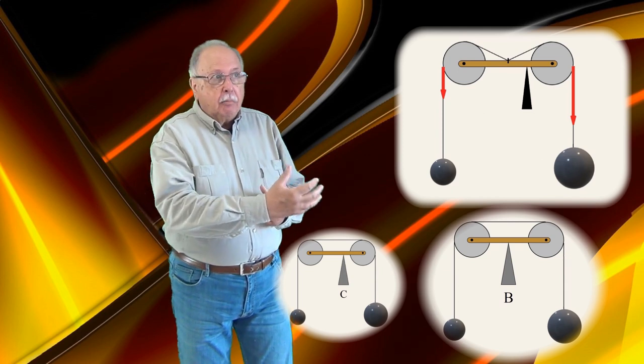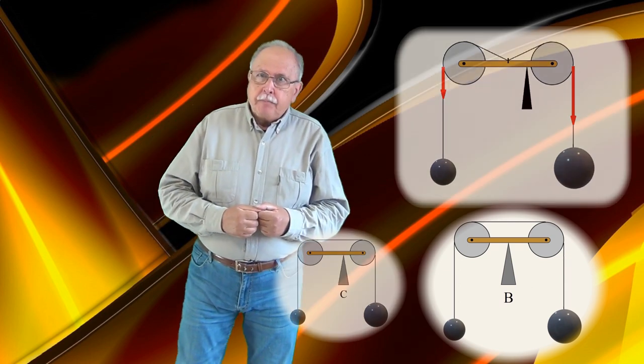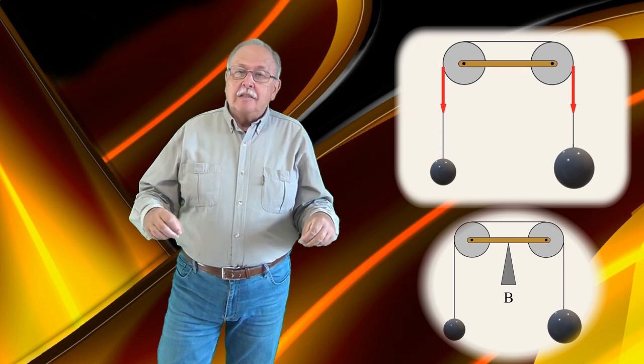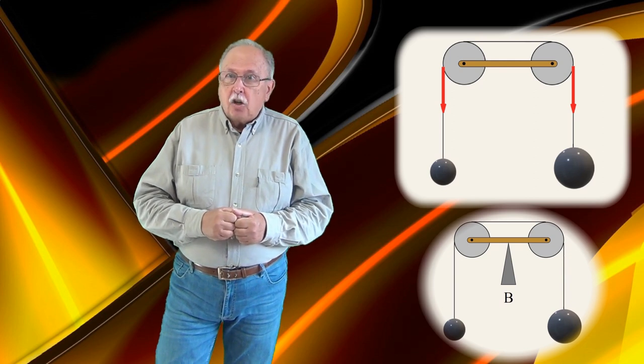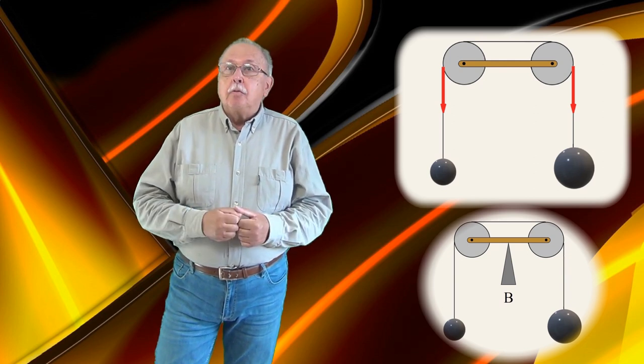But when the bodies move with acceleration, so they are not in equilibrium, the tension is the same everywhere in the thread, and the forces pulling the lever downward at its ends are in this case equal, so the lever must be supported in the middle. This is the correct answer to our question.